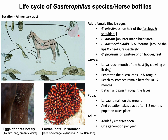Larvae remain and develop to third instar at this site for a period of 10 to 12 months. Finally, they detach and pass through feces. In the case of Gastrophilus haemorrhoidalis, the larvae reattach themselves in the rectum for a few days before passing out through feces. Afterwards, pupation takes place on the ground and adult flies emerge within one to two months. Notably, adult flies do not feed and live for only a few days or weeks, during which they mate and lay eggs for the next generation.